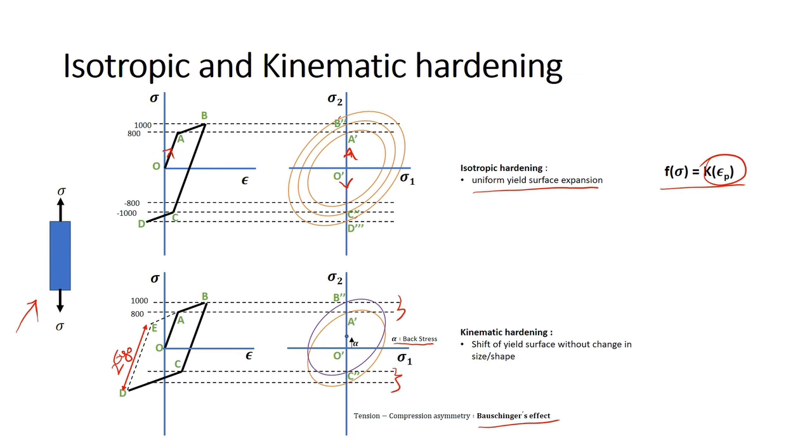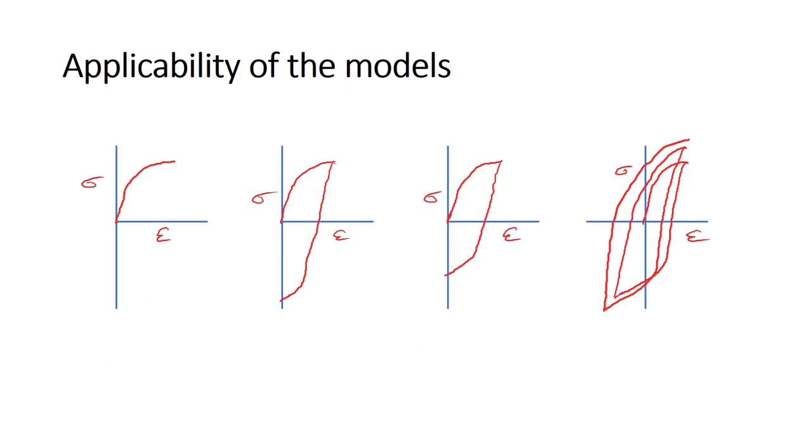Let's see what happens if we load it to a very high strain and then unload it. Let's load our specimen from O to A to B until F, then unload till G and further load till it hits C again. Observe that at very high strain, the reverse yielding occurs in the tension region itself, which is an interesting observation. The form of the equation here is F of sigma minus alpha equal to K.